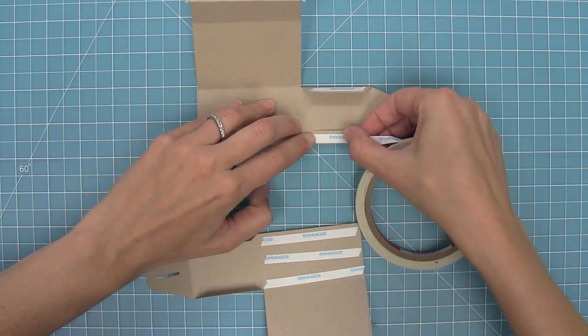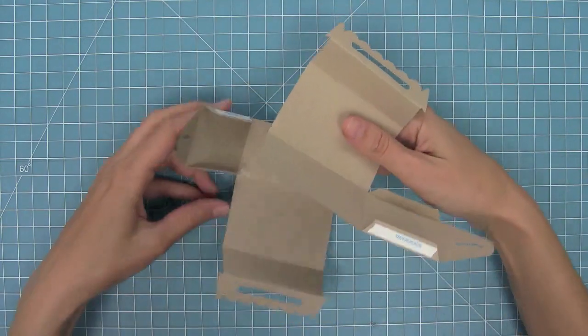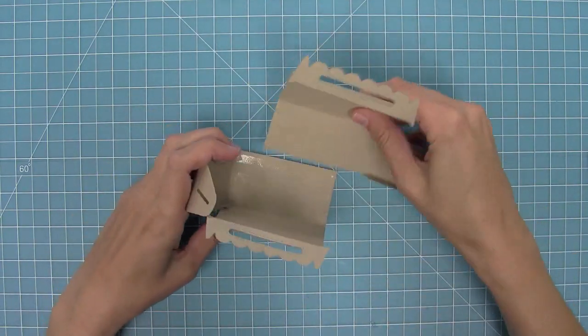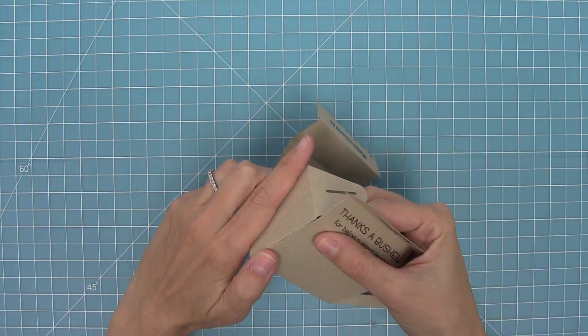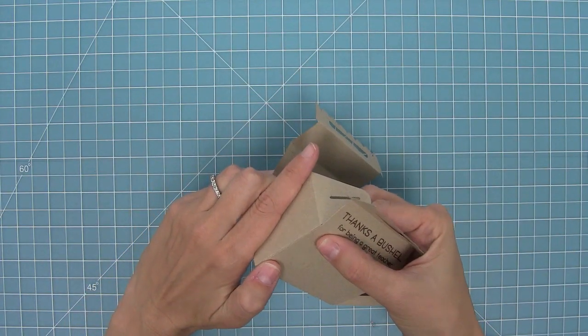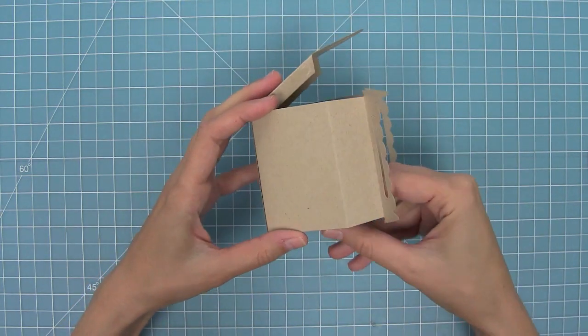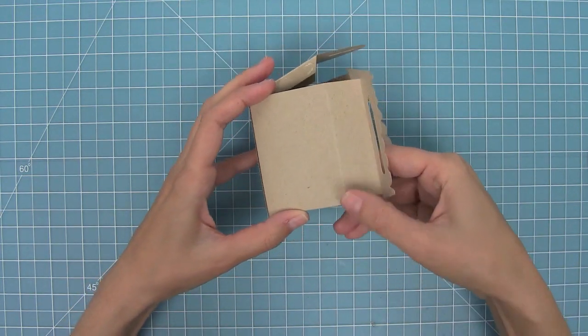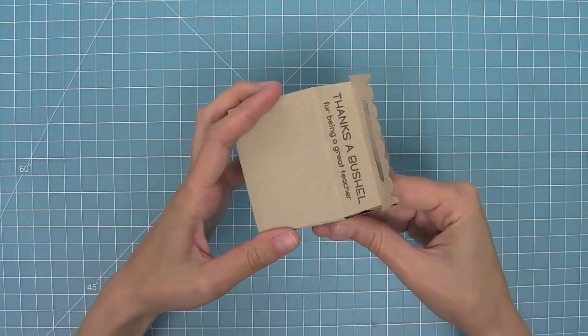Next I can remove the liner tape on the base piece and line them up in that T shape that we talked about earlier. Then I can go ahead and remove the rest of the liner tape and form the box by lining up those edges together. It's really easy to do, and once you do it once it goes by super quickly. So I'm going to line up all of those edges and my box is going to form. One of the best things about this box too is that it can fit a gift card, which is perfect for a teacher gift.